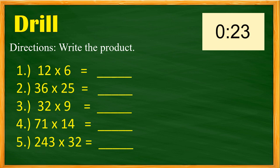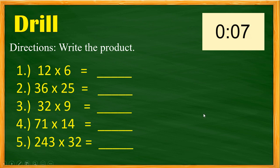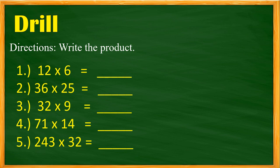Time is up! Let's reveal the answers. For number one we have 72, for number two we have 900, for number three we have 288, for number four we have 994, and for number five we have 1,376. I hope you got the correct answers.